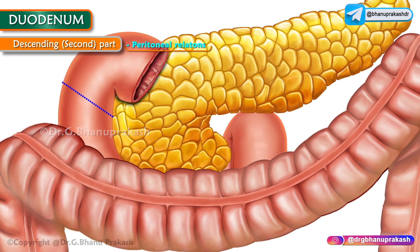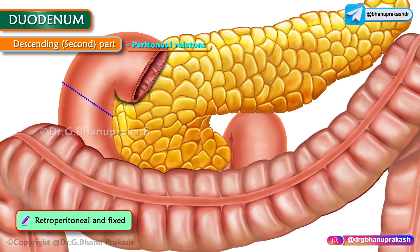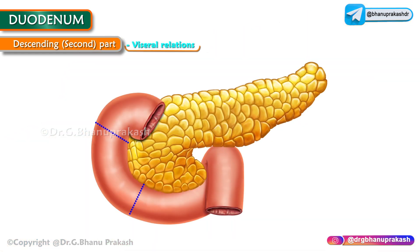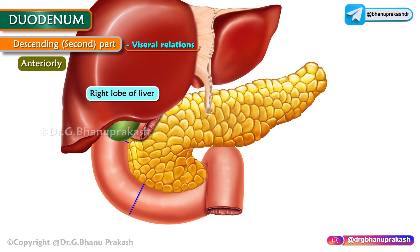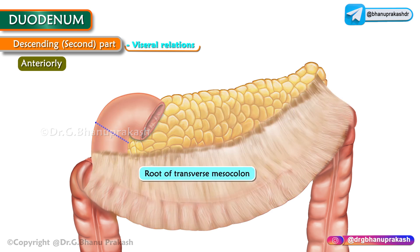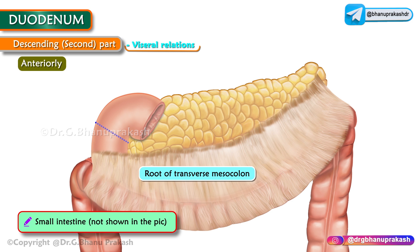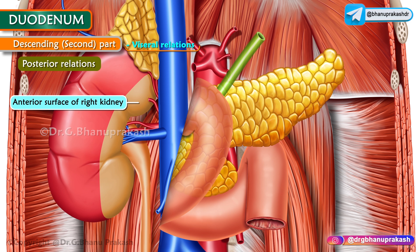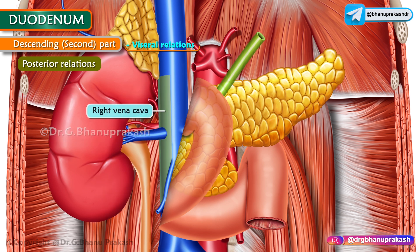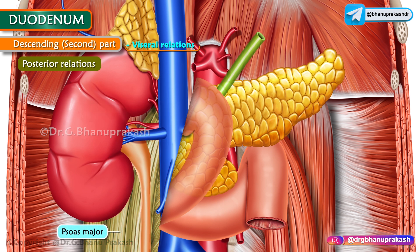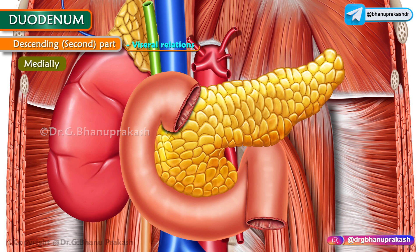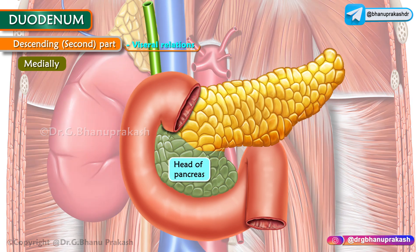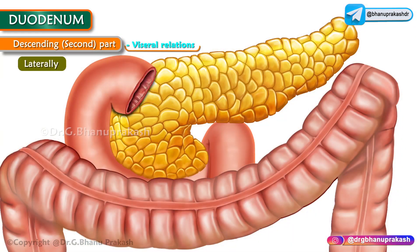The second part is retroperitoneal and fixed. In the middle of its anterior surface it is directly related to the colon, while the rest of the anterior surface is covered by peritoneum. Anteriorly: right lobe of the liver, transverse colon, root of the transverse mesocolon, and small intestine. Posteriorly: medial border of the anterior surface of the right kidney, right renal vessels, right edge of the inferior vena cava, and right psoas major. Medially: head of the pancreas and associated bile duct. Laterally: right colic flexure.